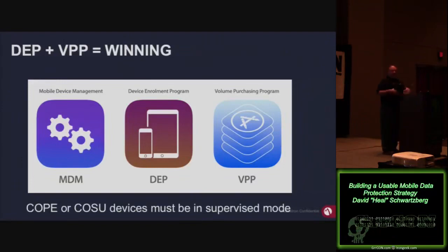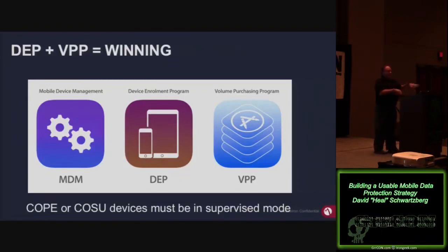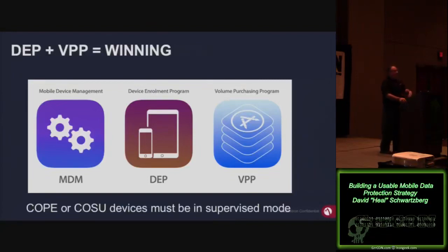VPP — Volume Purchase Program — was created for license reclamation. If you need 100 licenses of a paid app, instead of users expensing it repeatedly, you buy them upfront, licenses get consumed as people use them, and when somebody retires their device, you get the license back. Apple also added device-based app distribution for corporate-owned devices — the user doesn't need their Apple ID to get the apps. If it's corporate-owned, this is the way to go.